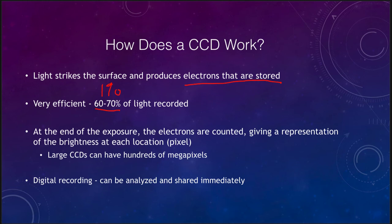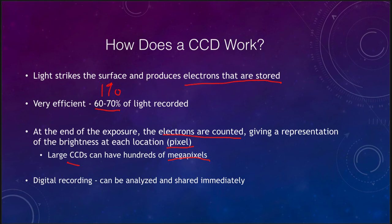CCDs are significantly more efficient than photographic plates and, like plates, provide a permanent record — unlike the eye. At the end of the exposure, those devices read out the electrons, giving a representation of the brightness of each pixel. You can imagine the image divided into millions or even billions of pixels — a large CCD can have hundreds of megapixels. It is also entirely digital, so it can be very easily analyzed. You can see the images immediately after taking them, bringing them up on a computer screen right away to check whether the image came out as desired or if you need to retake it.